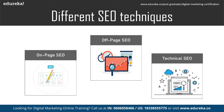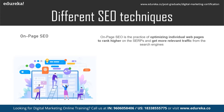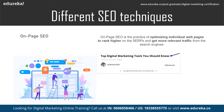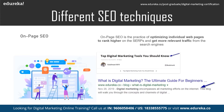On-page SEO is the practice of optimizing individual web pages to rank higher on the search engine result pages and get more relevant traffic from search engines. As the name suggests, it optimizes the content present on the page — such as title tags, meta tags, meta description, keyword density, and the URL of the page. As long as you focus on paying more attention to your content and the way it is presented to your viewers, you're in safe hands.